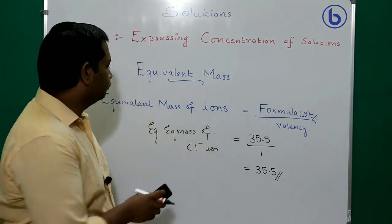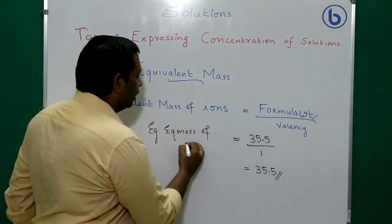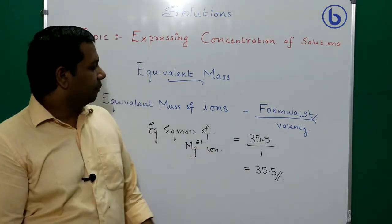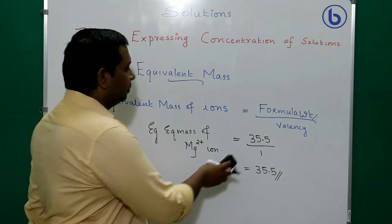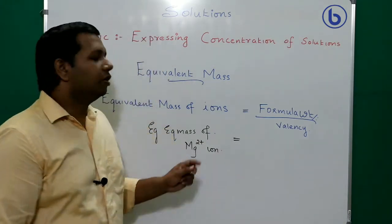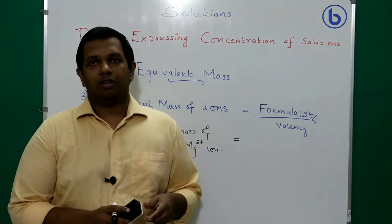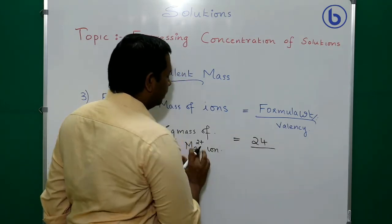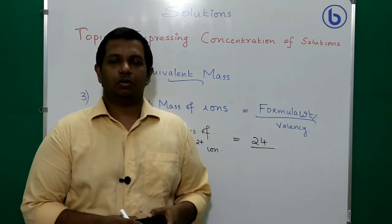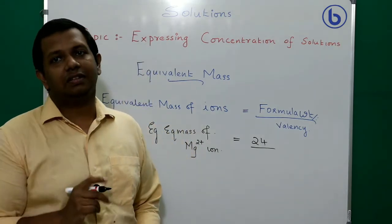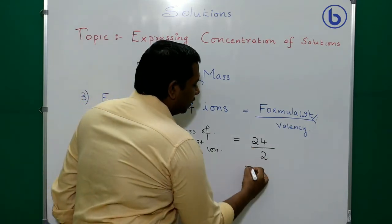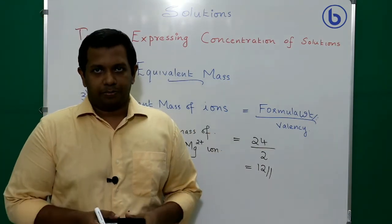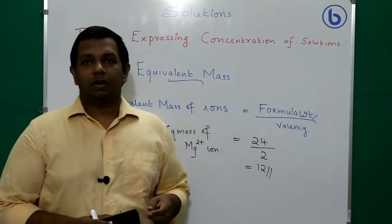Example: equivalent mass of Mg²⁺ ion. The formula weight of magnesium is 24 (atomic number 12, so atomic mass 24). The valency of magnesium is 2 (electronic configuration 2, 8, 2). Equivalent mass = 24 ÷ 2 = 12.